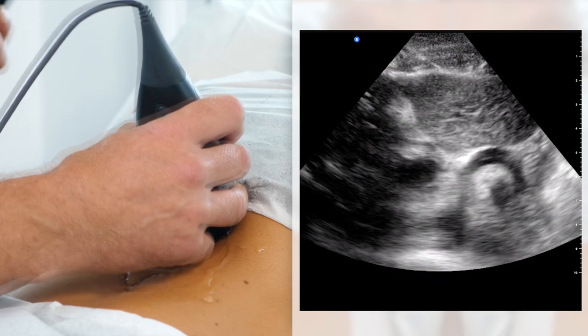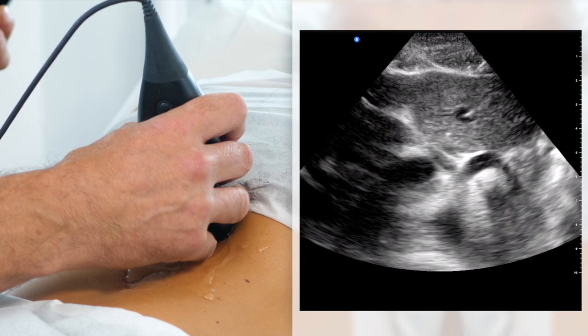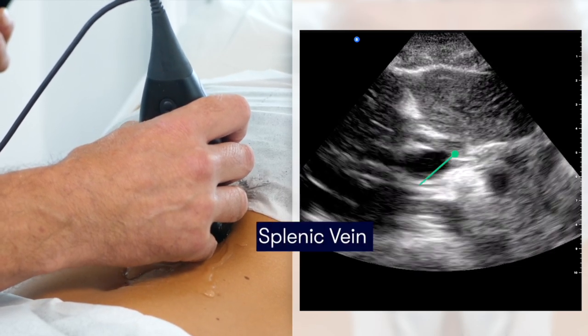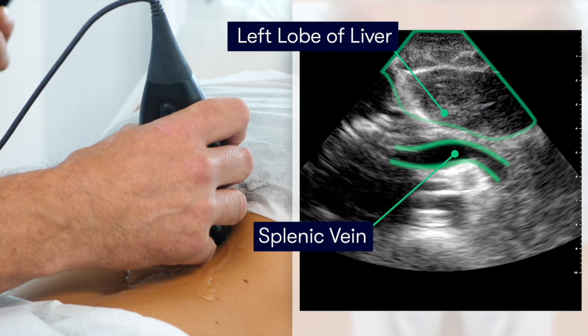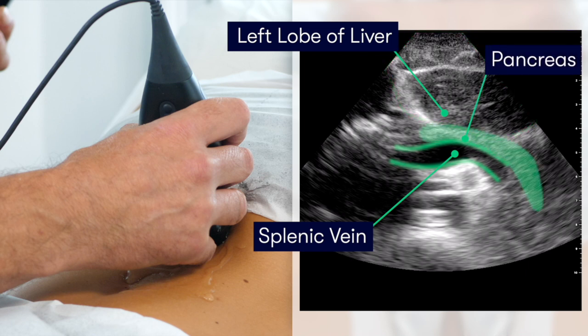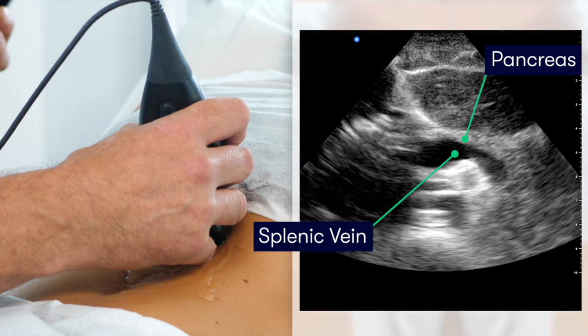As we move inferiorly, we can see the splenic vein is draped across the retroperitoneum. Superficial to this is the pancreas. The pancreas, in transverse section, is identified by finding the splenic vein, which we use as our landmark. This is the low echogenic structure that we can see in the middle of our screen, and the pancreas lies directly superficial to it, visible here as the grey band of solid tissue.